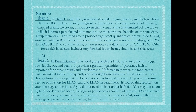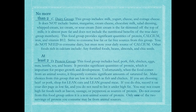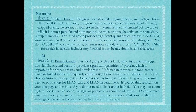The protein group includes beef, pork, fish, chicken, eggs, nuts, lentils, soy, and beans. It provides significant quantities of protein, which is important for growth and development. Unfortunately, animal sources often contain a lot of saturated fat. If you're choosing meat, choose fish, chicken, or turkey, as those are low in fat. If you're choosing beef or pork, get a lean cut or lean ground meat. If you don't, it needs to go under the high fat problem area.